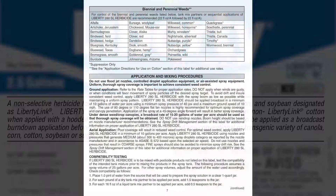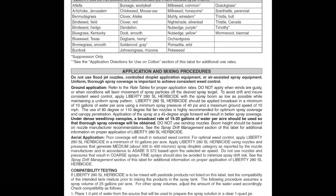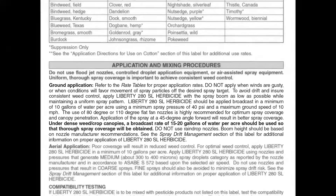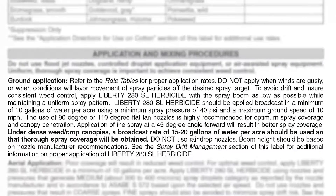The next thing is to find the application instruction section — in this case it's on page 7 of the label. Start by finding the ground application instructions and read through those. Look for any mention of the following items: type of nozzle, droplet size, or application rates to assist you in selecting the correct nozzle.